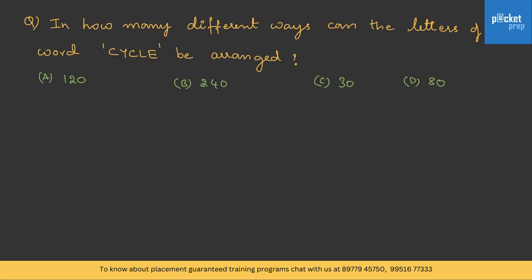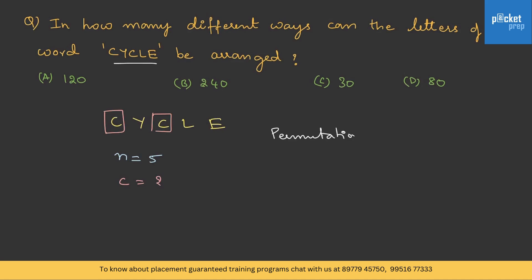Let us do one more. In how many different ways can the letters of the word 'CYCLE' be arranged? The letters are C, Y, C, L, E. The number of letters is 5, and C is repeating twice. So the arrangements equal n! divided by the factorial of the repeating letter's count: 5! / 2! = 120 / 2 = 60.